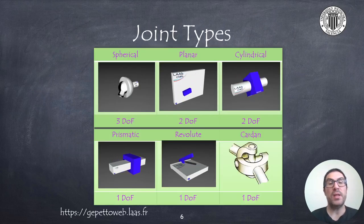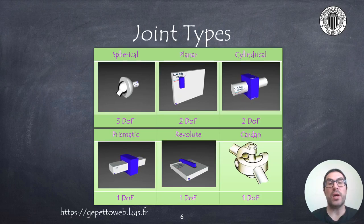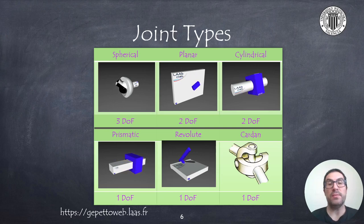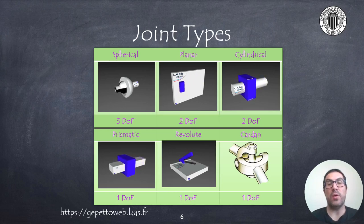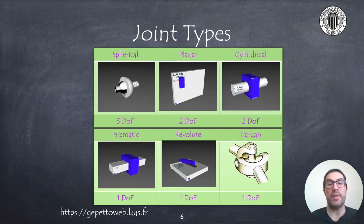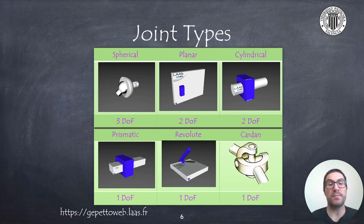So, this leads me to introduce what are the most common joint types that we can find in robotic systems. As you can see, we have the ball joint or the spherical joint, that allows 3 degrees of freedom, all of them defining the relative orientation between the two links.